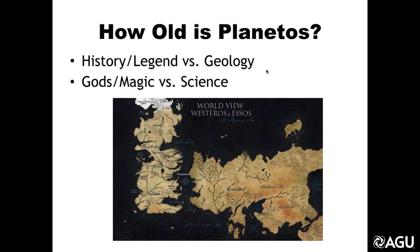Asking how old the Earth is reveals how we approach and examine the world. We have a historical and legendary way to look at our Earth, and we have a geological and scientific way. On our Earth these are very different stories. Legend and history says the Earth is thousands of years old and was created by a god in six days via divine magic, while geologists find that the Earth is billions of years old and came about through natural scientific law. So there's a significant disparity between legend and geologic truth.